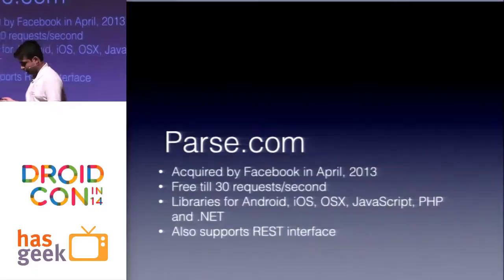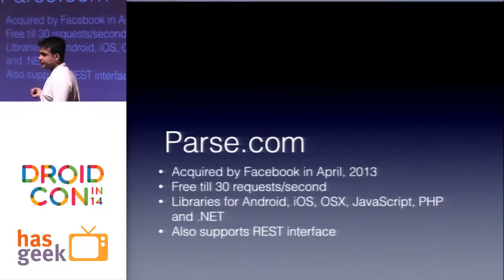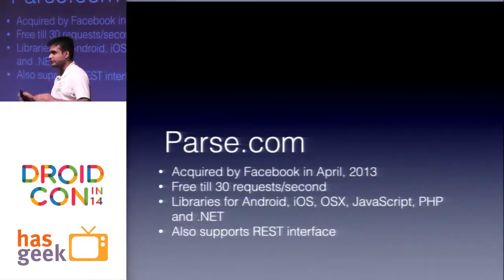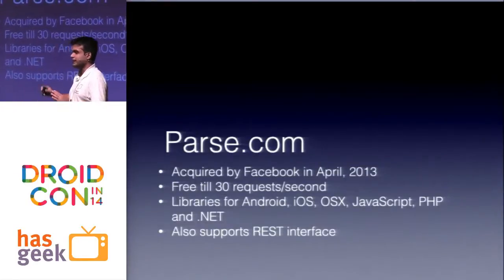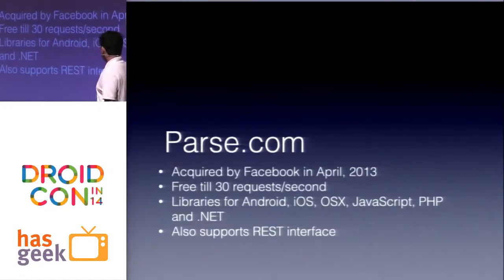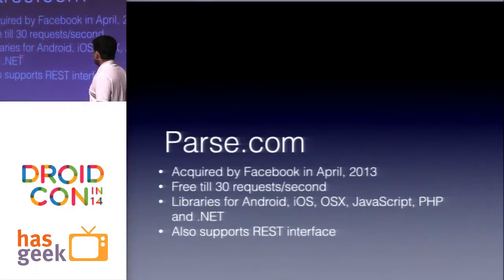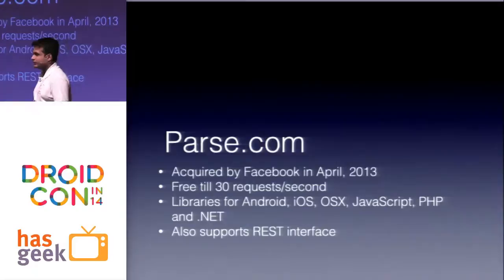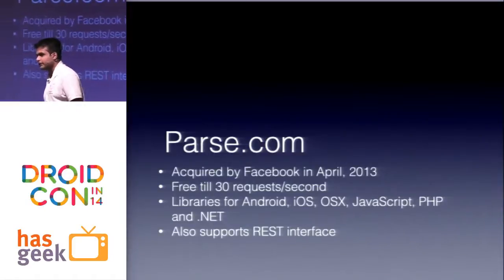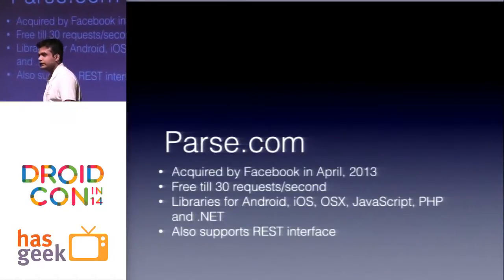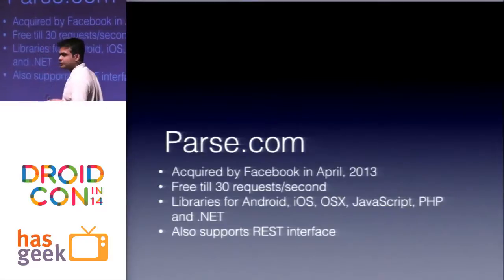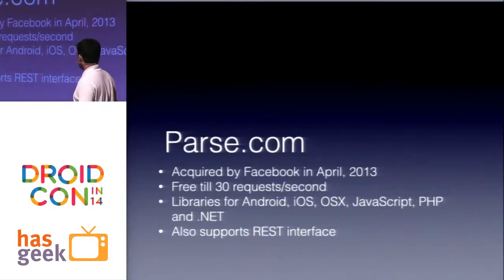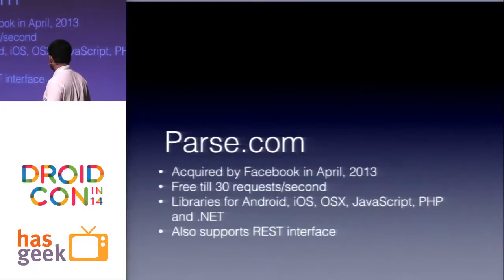Parse.com was acquired by Facebook last year, so we know it will stay around for some time — your data isn't going to disappear. It's free until you hit 30 API requests per second, which is quite a lot. If you have a hundred users using it twice a day, that's just 200 requests in the entire day, whereas the limit is 30 requests per second. It also has libraries for all the standard platforms.